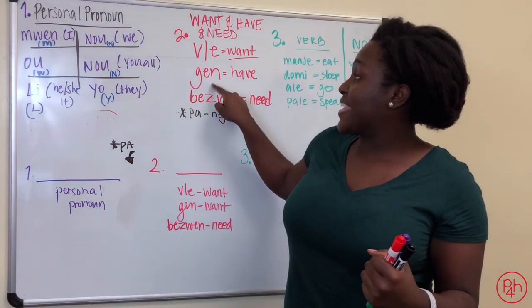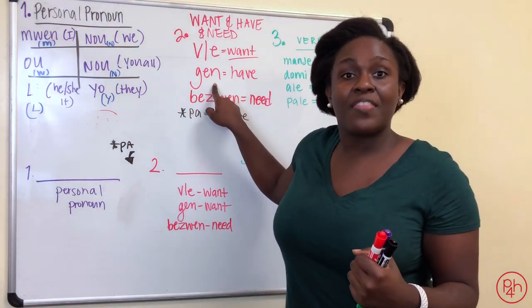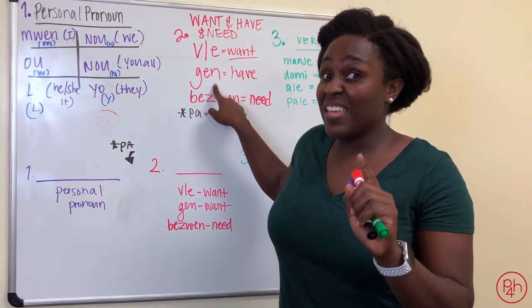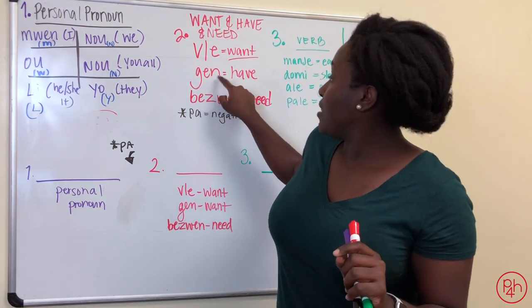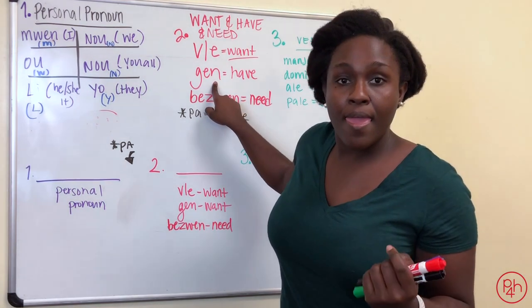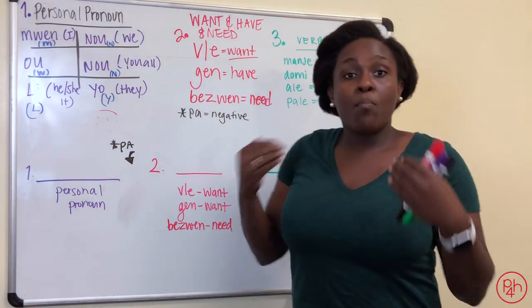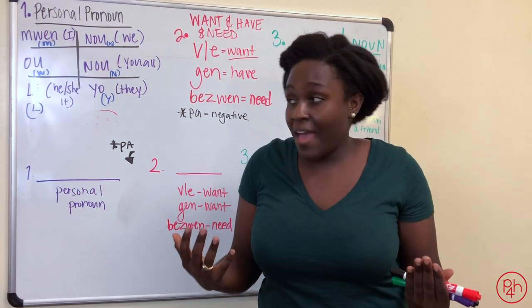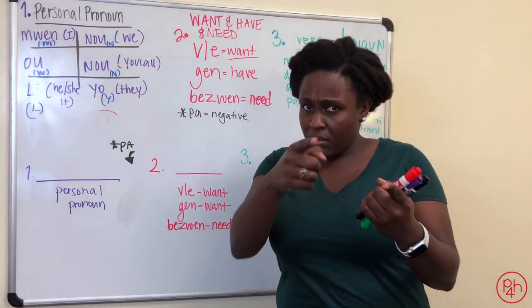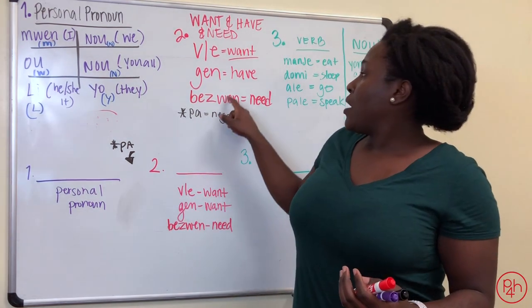If you want to say gen, to have, that is gen. Again, that is not gen with N sound. The EN makes the E sound. So gen is to have. Mwen gen, I have. U gen, you have.